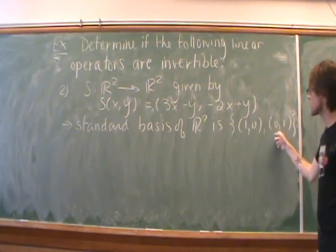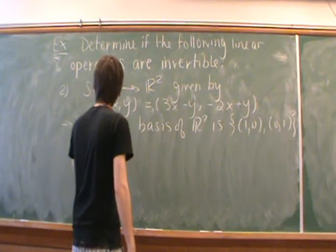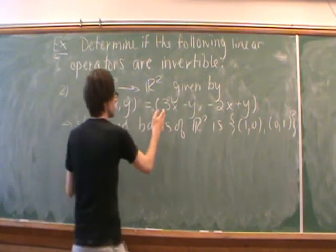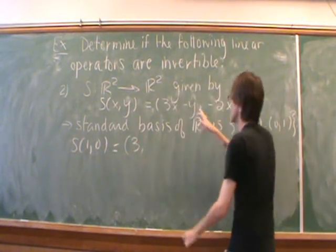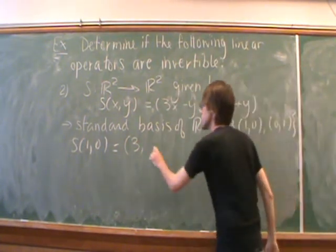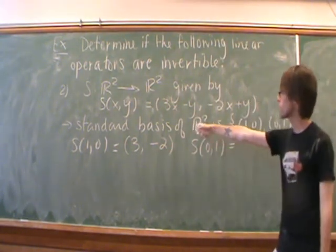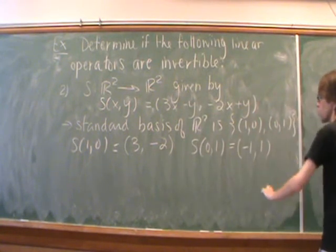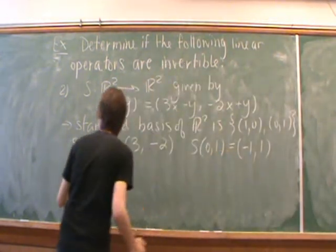So let's map these two vectors through S and see what happens. So what is S of (1, 0)? Well, I put in 1 everywhere I see x. So we'll get (3, -2). And S of (0, 1), we're going to put 1 everywhere we see y. So we'll have (-1, 1). And we want to analyze this set of vectors.